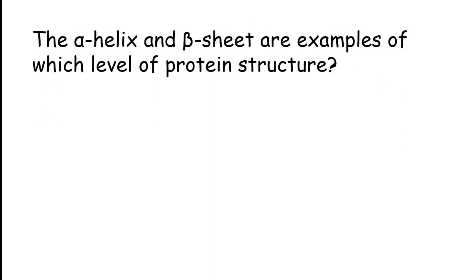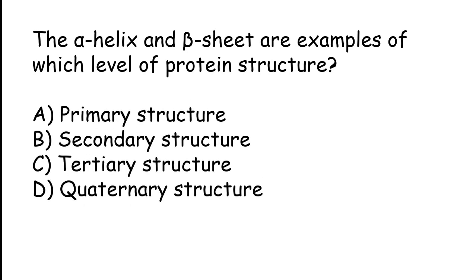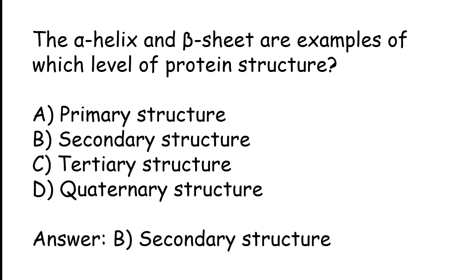The alpha helix and beta sheet are examples of which level of protein structure? Options: primary structure, secondary structure, tertiary structure, quaternary structure. The correct answer is option B: secondary structure.